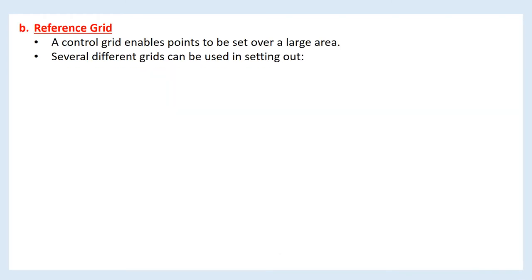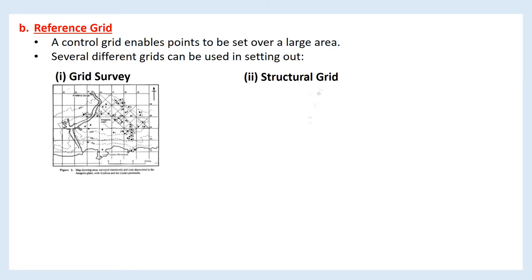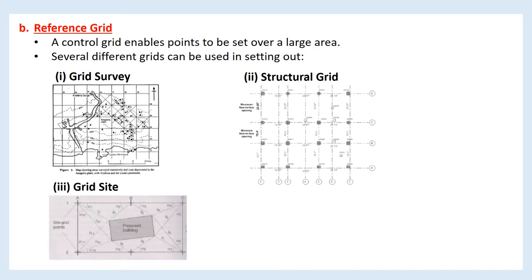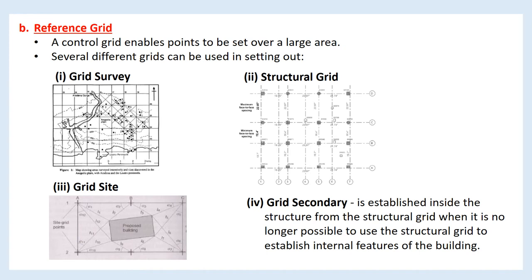A second horizontal control method uses reference grids. A control grid enables points to be set out over a large area. Several different grids can be used in setting out: 1. Survey grid, 2. Structural grid, 3. Site grid, 4. Secondary grid — established inside the structure from the structural grid when it is no longer possible to use the structural grid to establish internal features of the building.